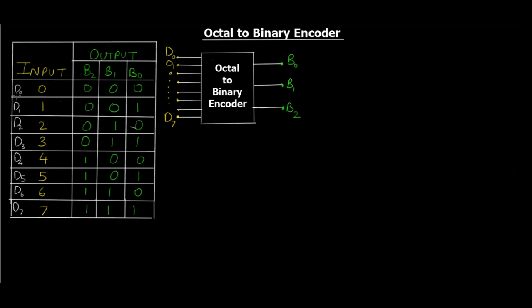As you can see on the screen, we have eight inputs since the input is going to be in octal format. So we have eight inputs D0 through D7, and these inputs represent the octal numbers from 0 to 7. Remember, we have 0 to 7 only in the octal number system.